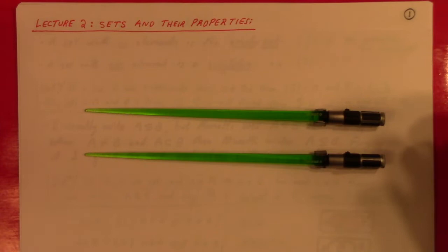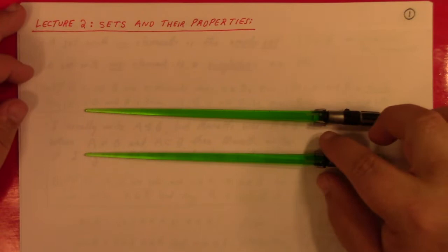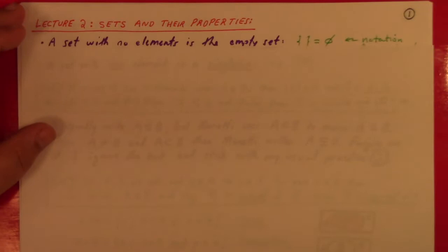Alright, let's begin lecture two, which is on sets and their properties. I accidentally covered a little bit about maps in this lecture because I forgot my plan, but I hope you can forgive me. They all kind of go together. This material is material you might find in your Introduction to Proofs course, so I won't prove everything, but let's just get into it.